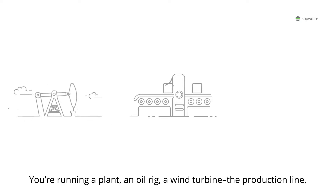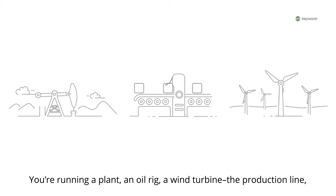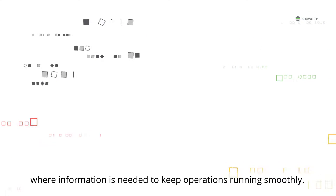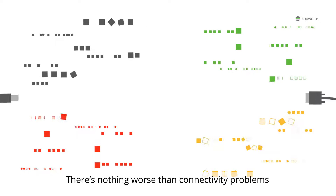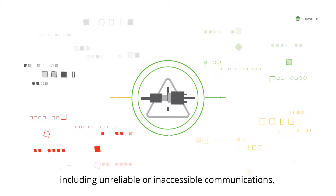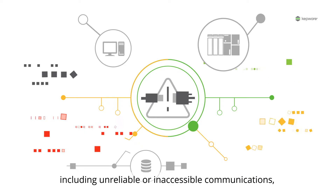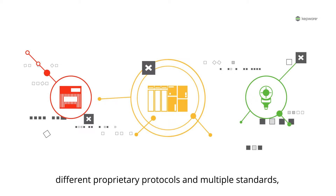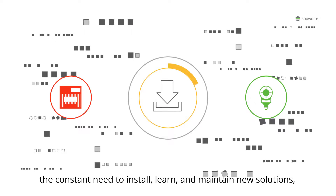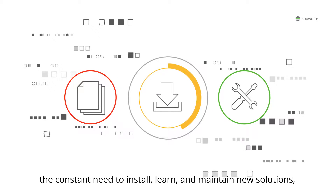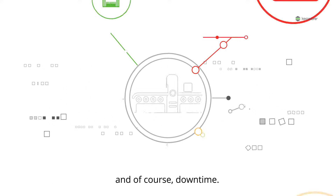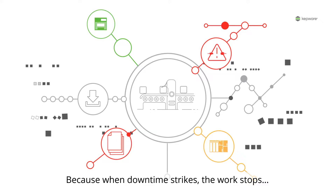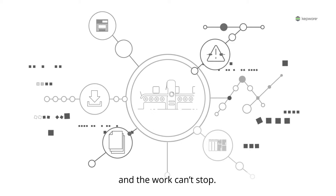You're running a plant, an oil rig, a wind turbine, the production line where information is needed to keep operations running smoothly. There's nothing worse than connectivity problems including unreliable or inaccessible communications, different proprietary protocols and multiple standards, the constant need to install, learn and maintain new solutions, and of course downtime. Because when downtime strikes, the work stops — and the work can't stop.